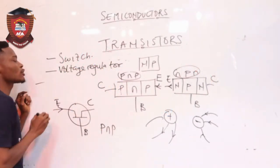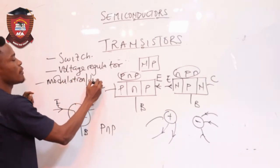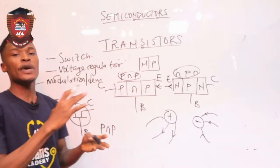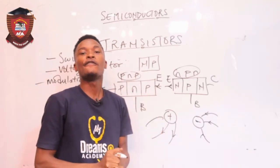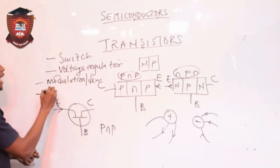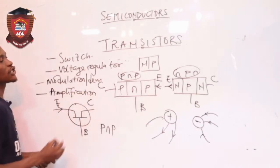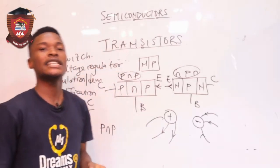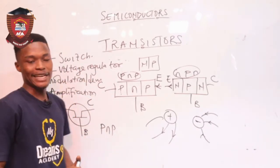We can also use the transistor in modulation and demodulation. Modulation involves the coding of information into a carrier signal, while demodulation means the extraction of information from a carrier signal. Another major use of the transistor is amplification — it can be used for power amplification, current amplification, and voltage amplification. In fact, amplification is the major use of the transistor.